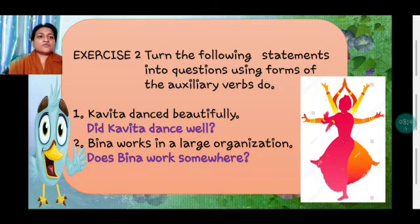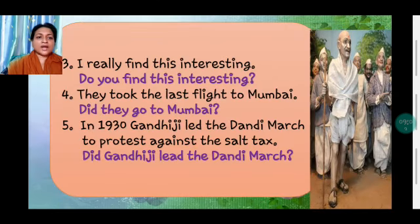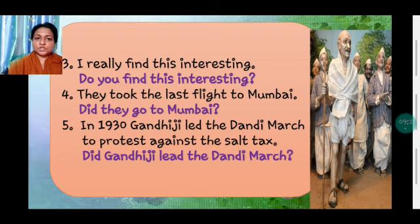Exercise 2: turn the following statements into questions using forms of the auxiliary verb 'do'. 'Kavita danced beautifully' — 'ed' is there, so: 'Did Kavita dance well?' 'Beena works in a large organization' — 's' is there, so: 'Does Beena work somewhere?' 'I really find this interesting' becomes 'Do you find this interesting?' 'They took the last flight to Mumbai' becomes 'Did they go to Mumbai?' 'In 1930 Gandhiji led the Dandi March to protest against the salt tax' becomes 'Did Gandhiji lead the Dandi March?' Don't forget to put a question mark at the end.